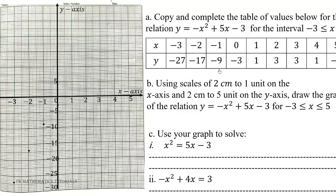We now plot the points — the x and y values — as you can see on the graph. Then we draw a smooth curve through them. This is how the graph of the relation y = -x² + 5x - 3 looks.